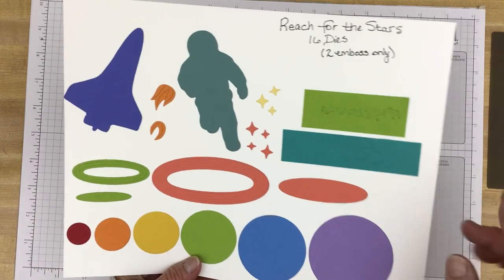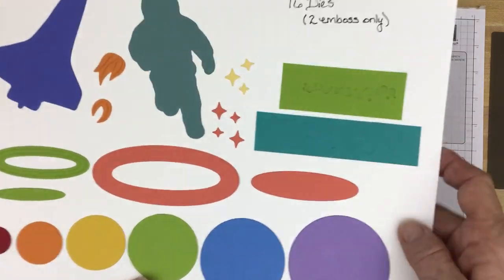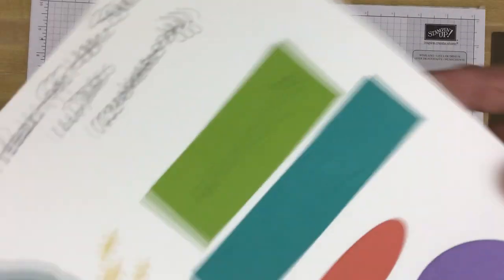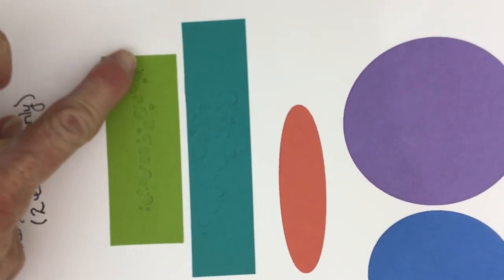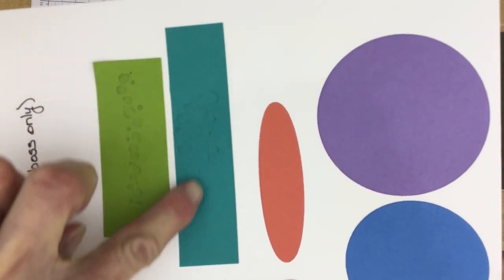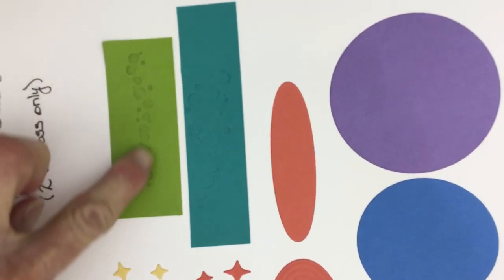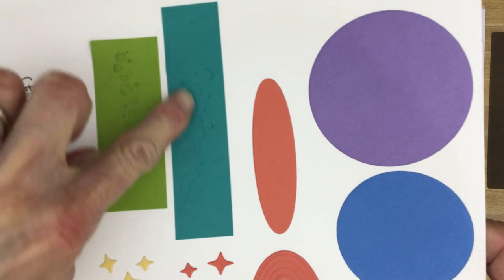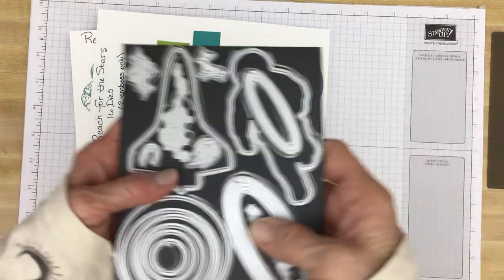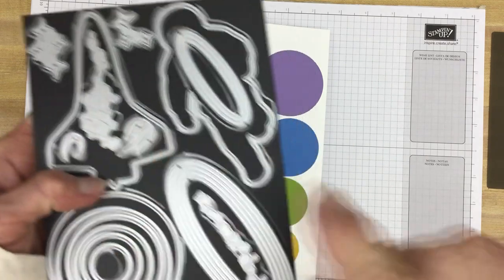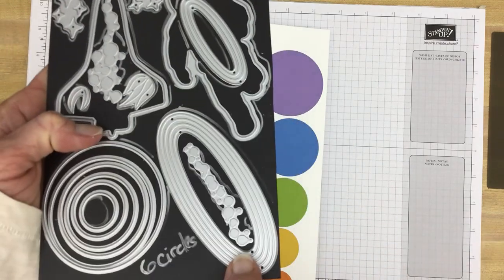Then there are two dies that are embossing dies. And this might be difficult. Let me see if I can get this up there. But they emboss like craters that you might have on a planet. And that's this die right here. And this die right here.